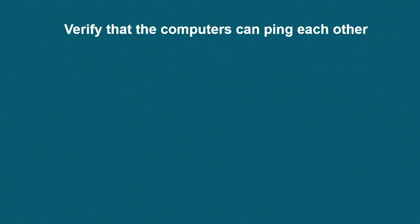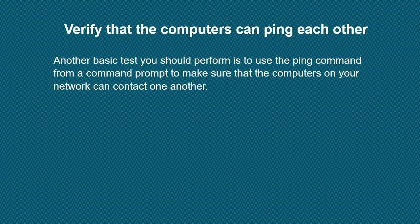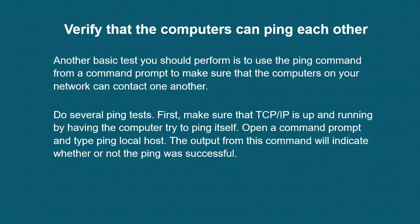The last part is to verify that the computers can ping each other. Another basic test you should perform is to use the ping command from a command prompt to make sure that the computers on your network can contact one another. Do several ping tests. First, make sure that TCP/IP is up and running by having a computer try to ping itself. Open a command prompt and type ping localhost. The output will indicate whether or not the ping was successful.